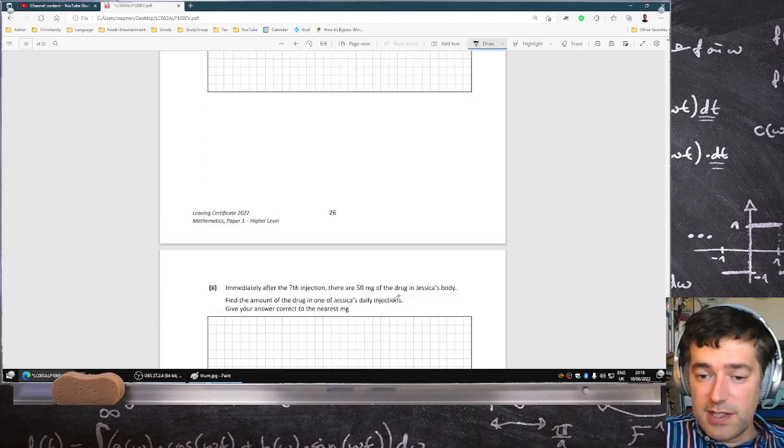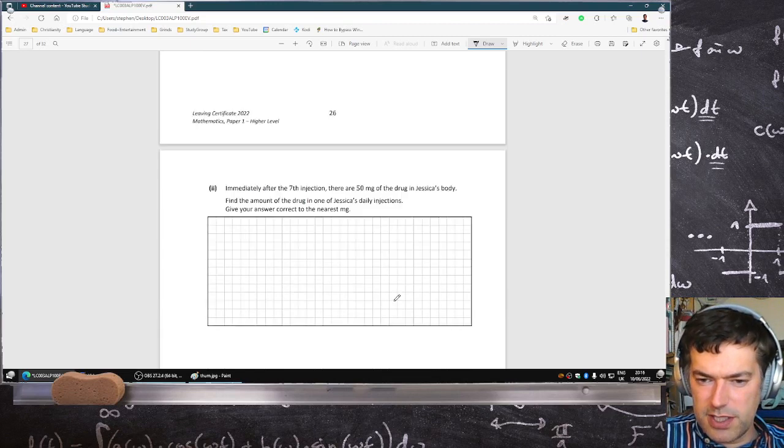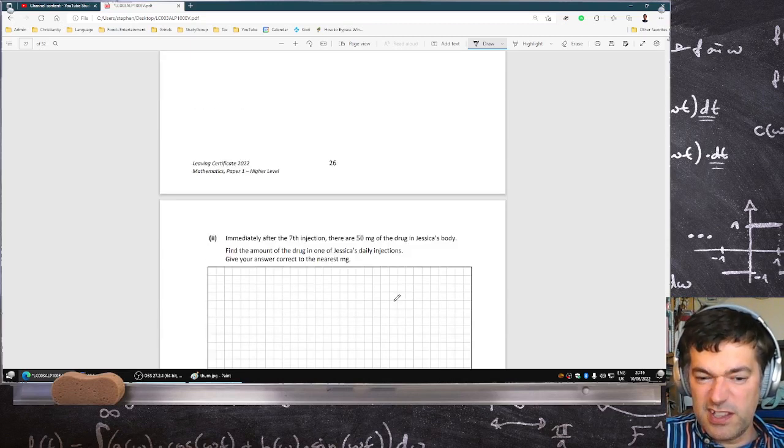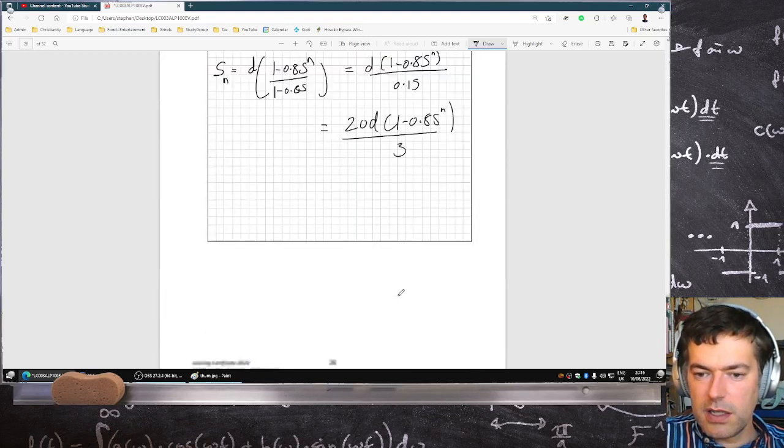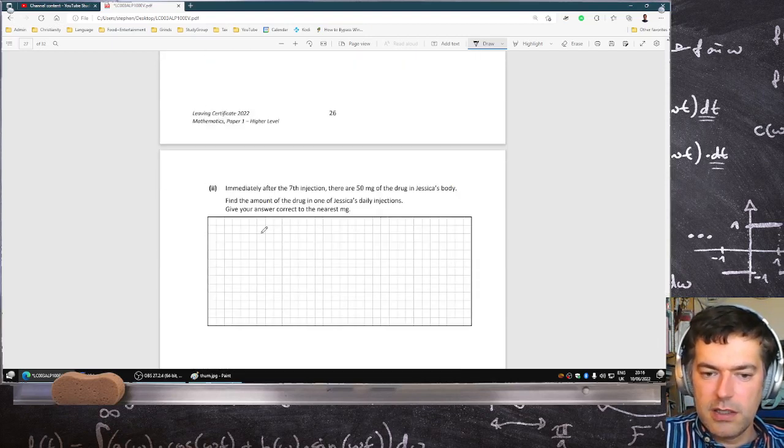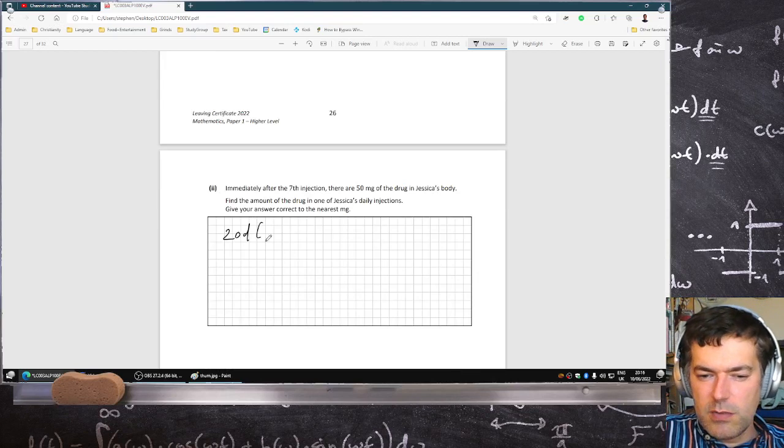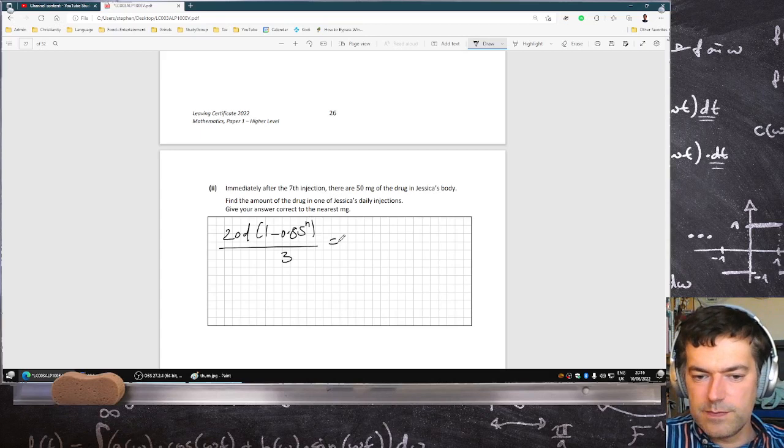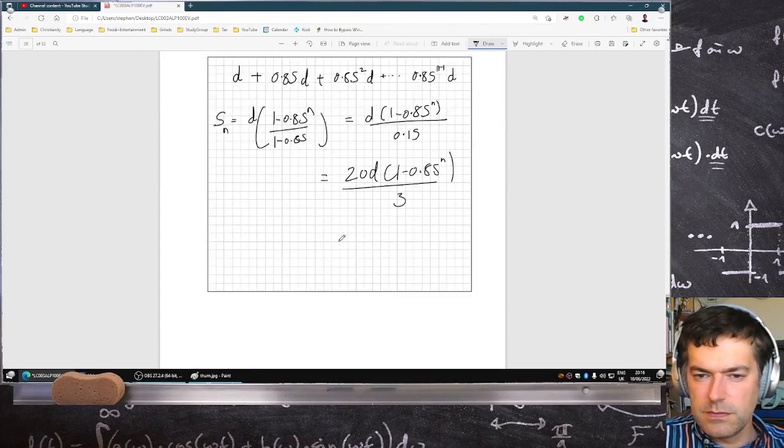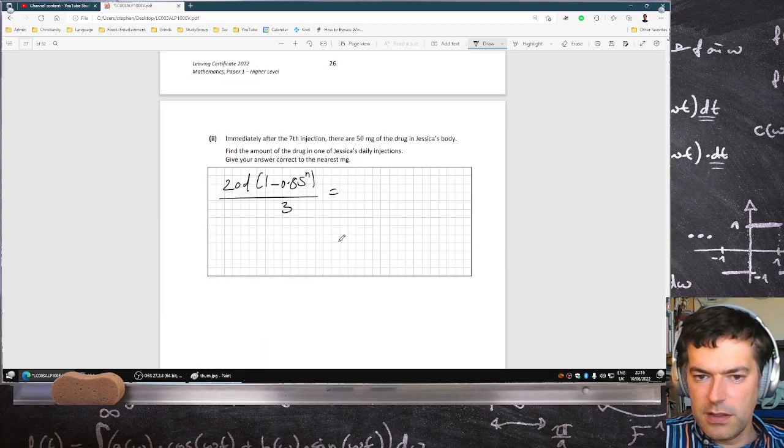Immediately after the seventh injection, there are 50 milligrams of the drug in Jessica's body. Find the amount of drug, so find D. And we have the equation here. 20D times 1 minus 0.85 to the N over 3 equals... and we know the N. It's after the seventh injection. So that's actually a seven. And that should equal 50.